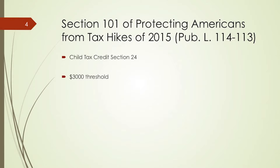Looking at slide number four, we're looking at Section 101 of the Protecting Americans from Tax Hikes Act of 2015, known as the PATH Act. One of the first sections changed — Section 101.01 of the PATH Act — made permanent the earned income threshold of $3,000, which is used to determine the child tax credit under Section 24. You must make sure you're aware of this $3,000 earned income threshold.